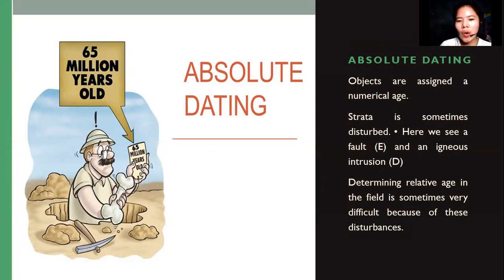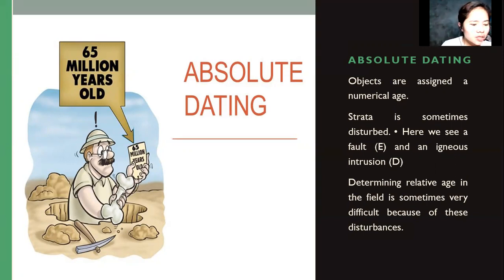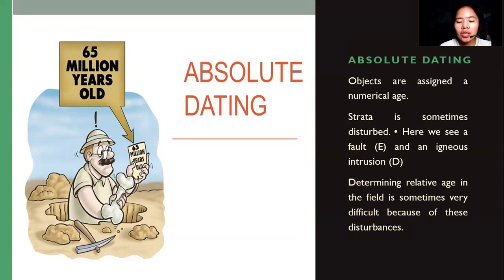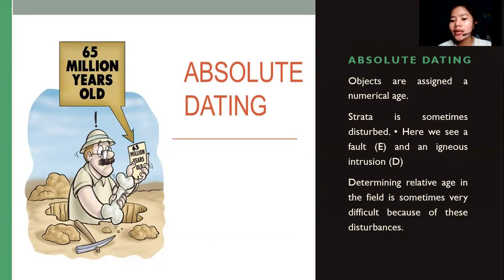Absolute dating gives the exact time of fossils — objects are assigned a numerical age. For example, my absolute dating age is 26, while my relative dating classification is simply 'young.' That is the difference between absolute and relative dating. Strata are sometimes disturbed, making it difficult to determine the absolute age of a fossil in the field due to these disturbances or intrusions.